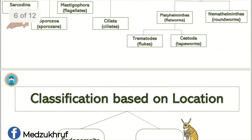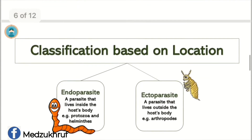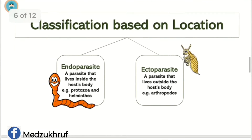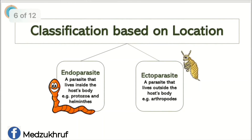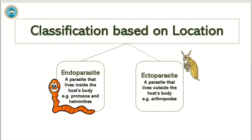Classification of parasites on the basis of location: An Endoparasite is a parasite that lives inside the host's body — for example, protozoa. An Ectoparasite is a parasite that lives outside the host's body — for example, arthropods.